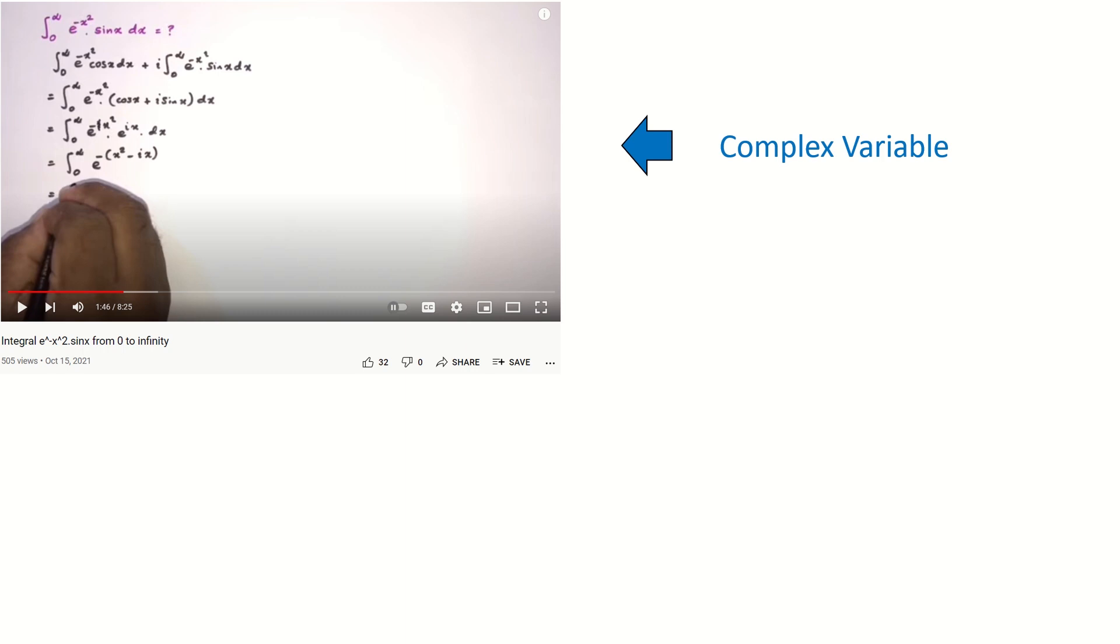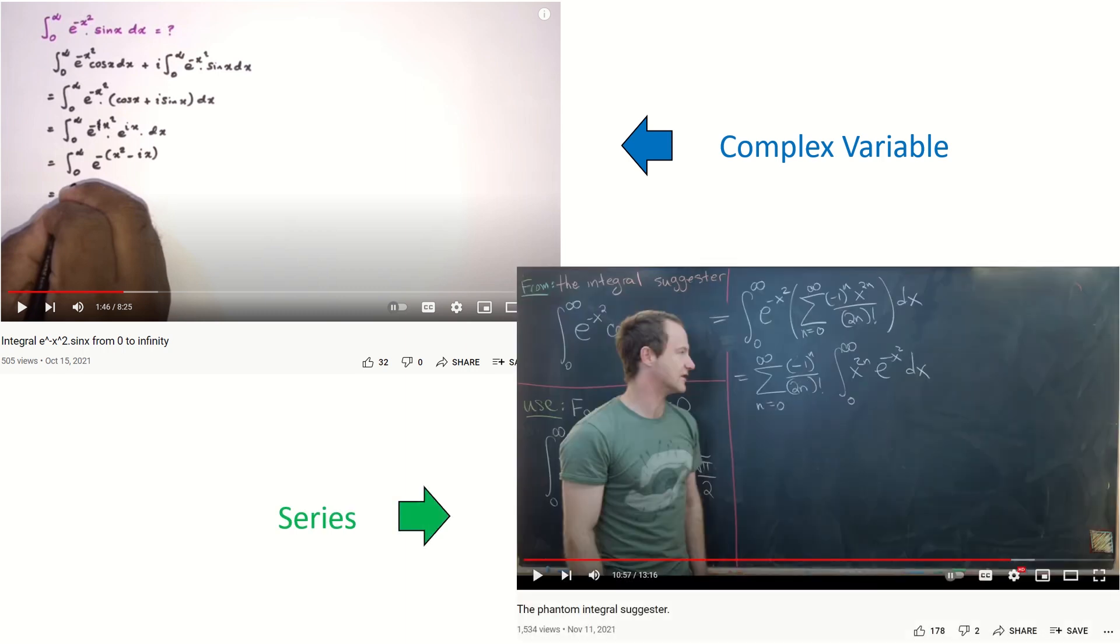And a few weeks later, Michael Penn did a video on solving this problem by using the series method. The complex variable method is quicker, and you can find this by comparing the video length. I will use a very elegant method to solve this problem, and this method will be a shortcut.